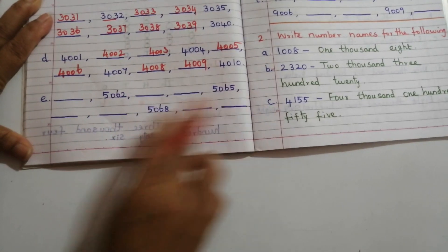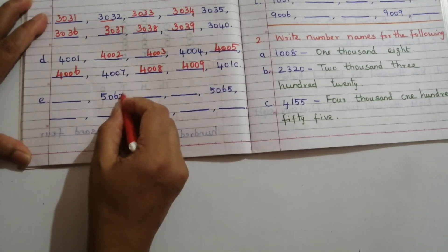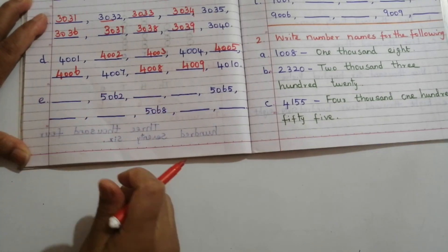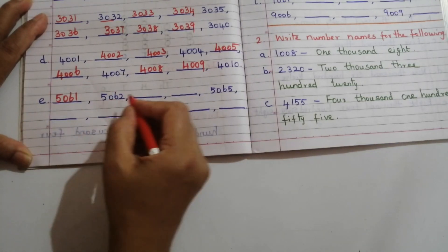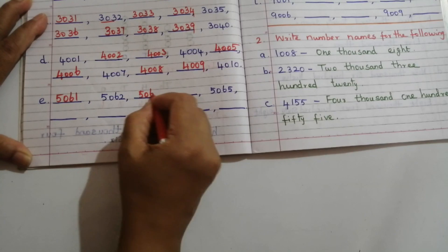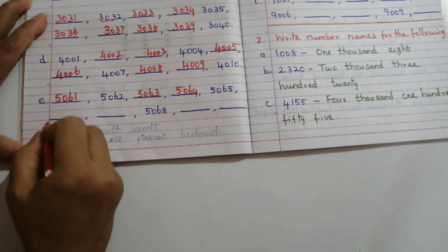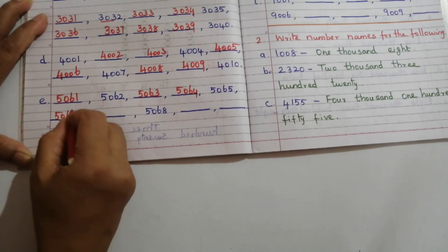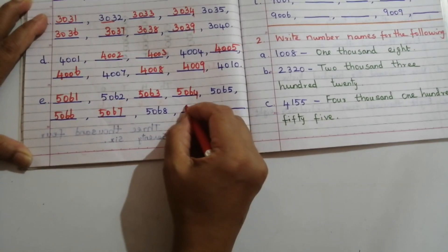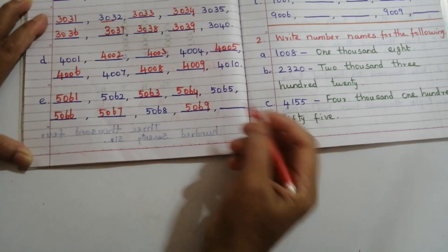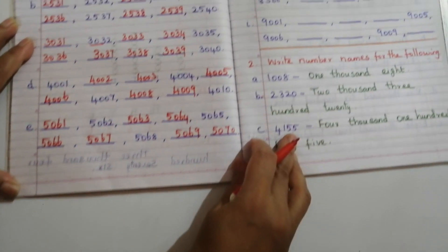Problem E: dash, 5062, dash, 5065, dash, 5068, dash, dash. The number before 5062 is 5061. So the sequence is: 5061, 5062, 5063, 5064, 5065, 5066, 5067, 5068, 5069, and 5070.